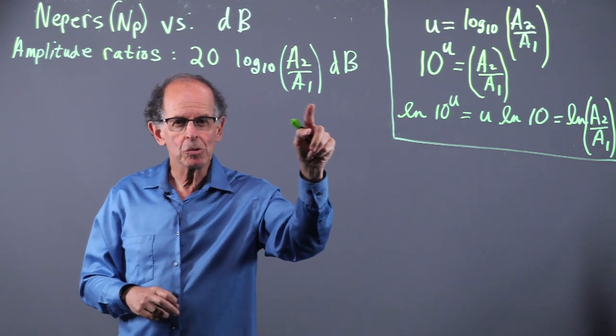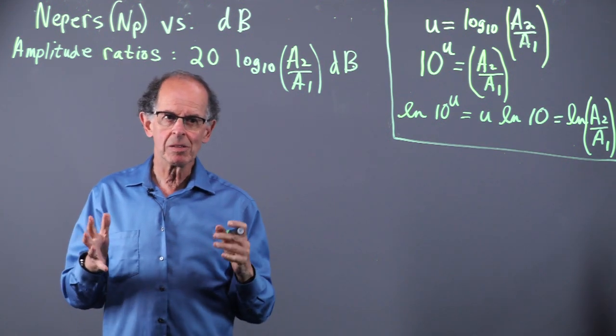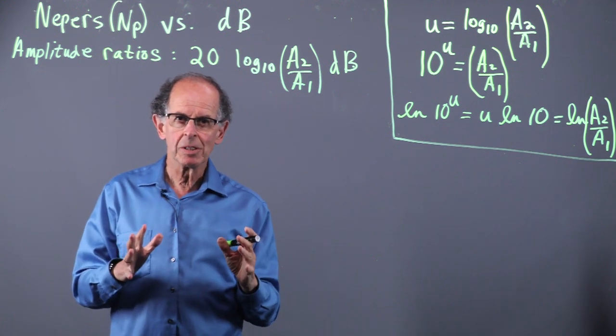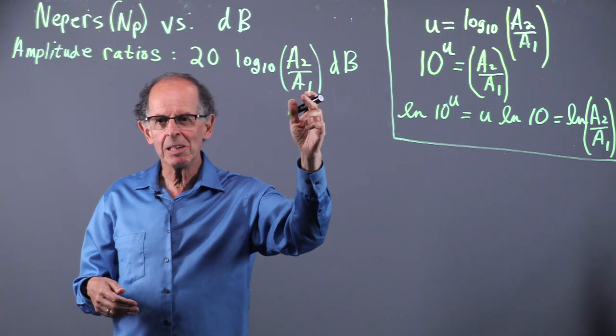Now, why do we use logs for ratios? Well, that's because of something called dynamic range. In other words, for example, if A2 is 10 million and A1 is 1, the ratio is going to have basically 7 digits.